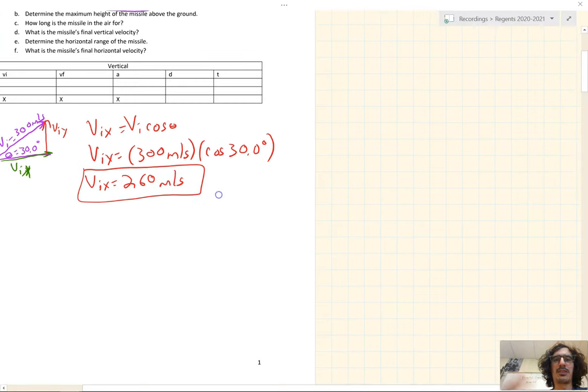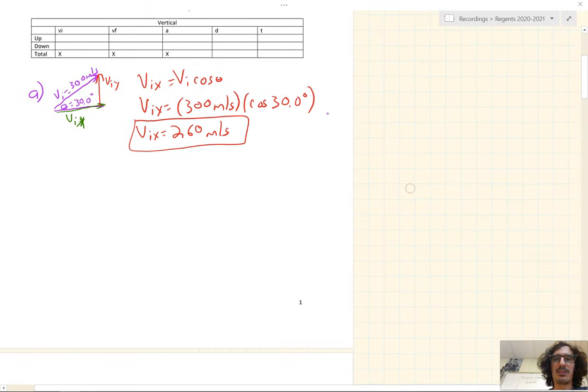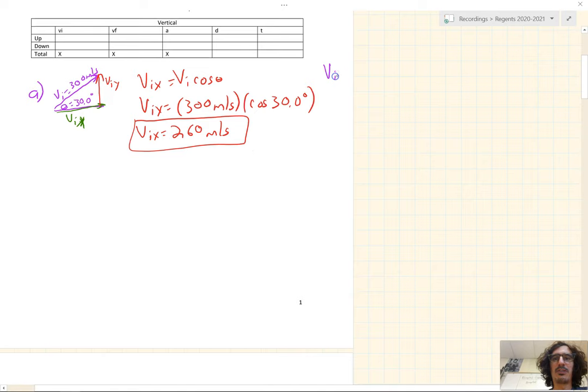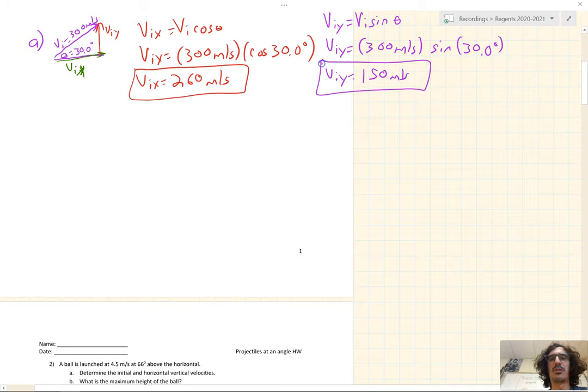Let's find the initial vertical velocity. Similar formula. VIY is equal to VI sine of theta. VIY is 300 meters per second times the sine of 30 degrees. Make sure we're in degrees in our calculators. We wouldn't change unless we did this math in between. And we get 150 meters per second for our initial vertical velocity.